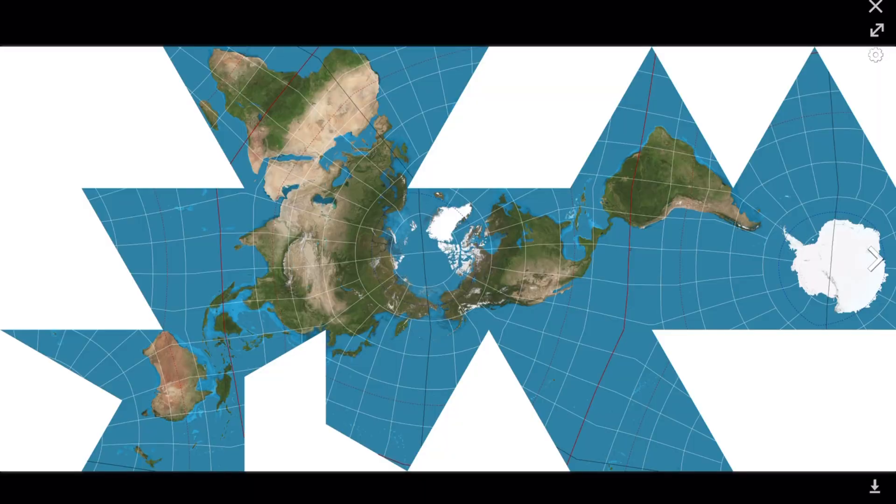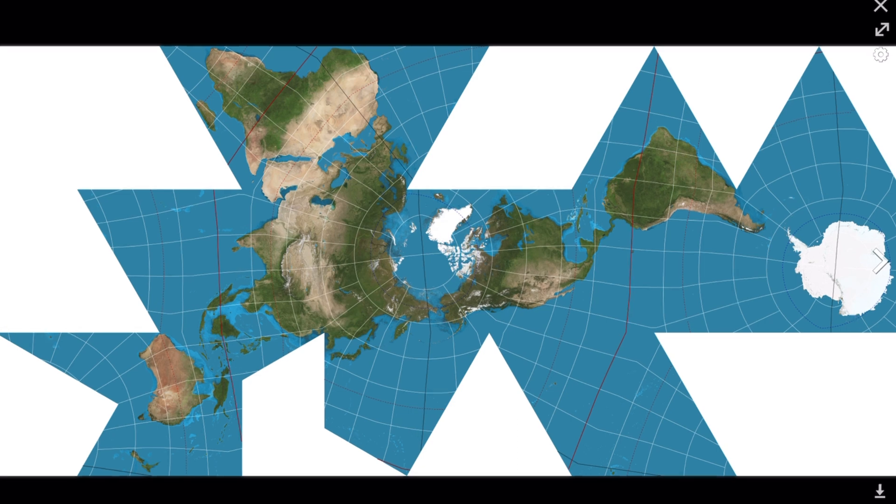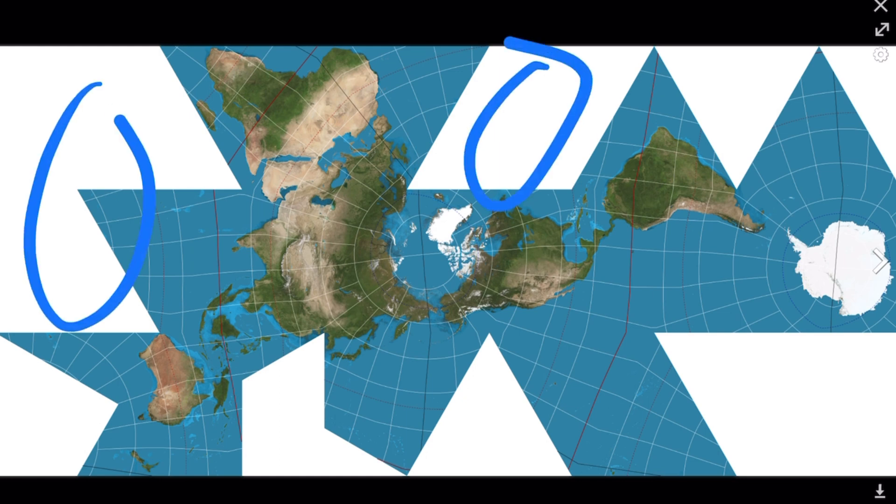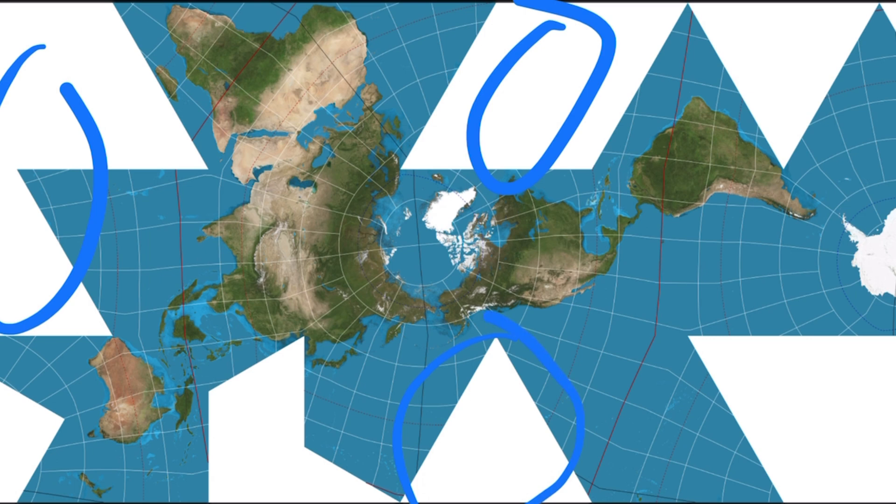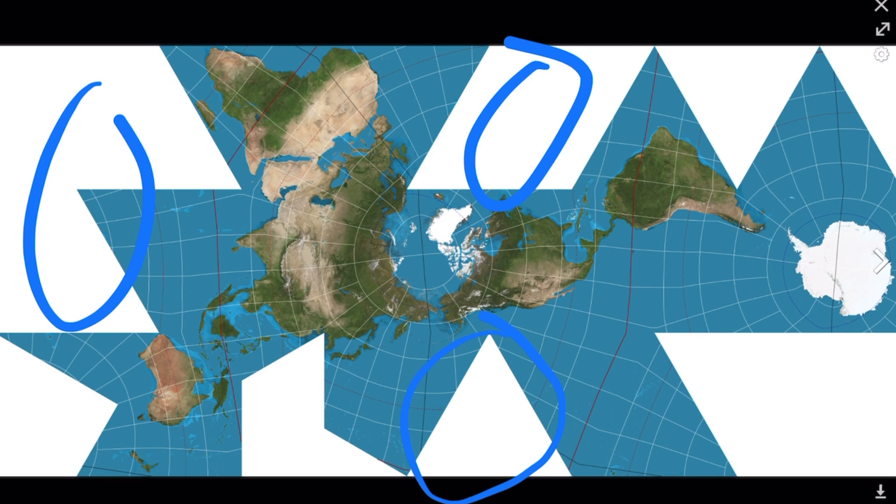So coming back to the Dymaxion world projection, this is a compromise so it's not exactly a conformal or an equal area map. They're trying to find a good balance point, a good medium, and the sacrifice here is all of this. This whole geometric cutout design helps to eliminate the distortion that otherwise would be there. Another compromise of this map, which is also one of my favorite features, is that it has to give up the north-south top-bottom kind of perspective.